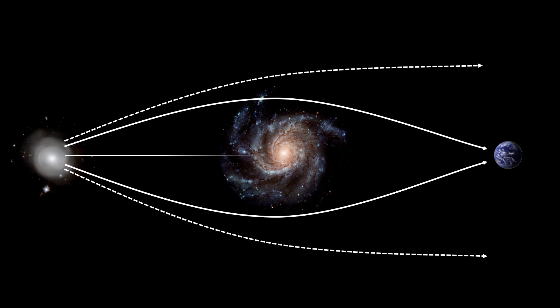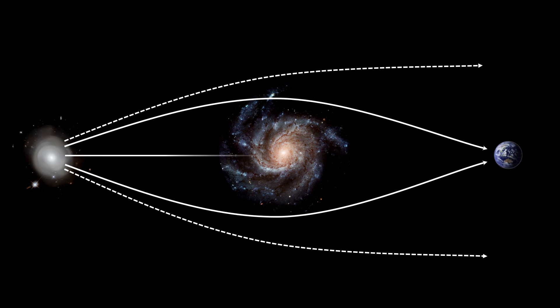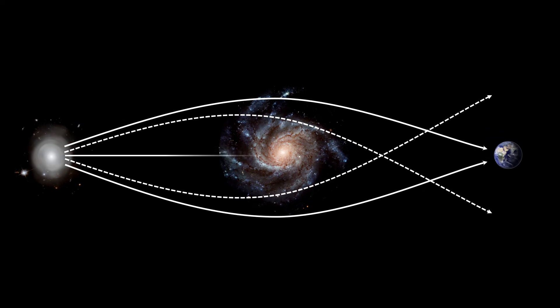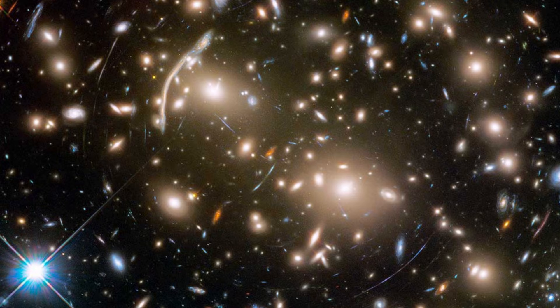Light that passes the central object further away will bend less and will therefore miss earth, and the same is true for the light that passes the object too close by. So for this reason the lensing often shows up as fairly narrow circular lines.